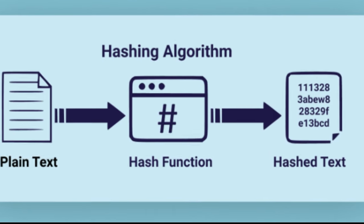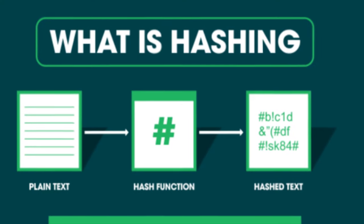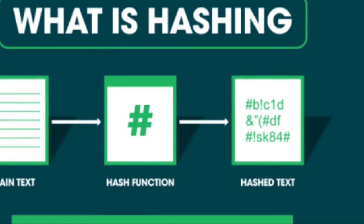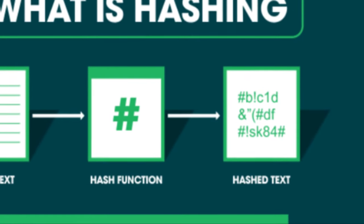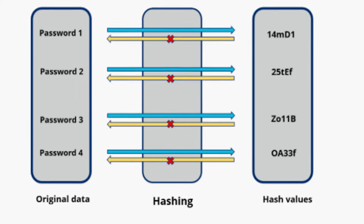Hashing is a process that transforms input data, or a message, into a fixed-size string of characters, which is typically a sequence of numbers and letters. The output, known as a hash value or hash code, is unique to the specific input data.